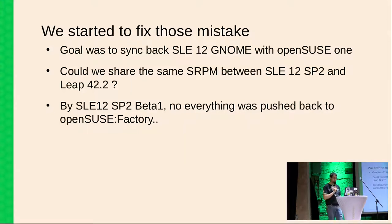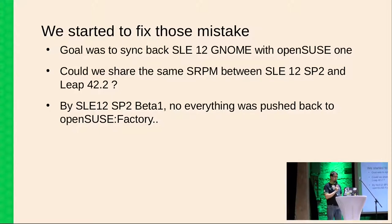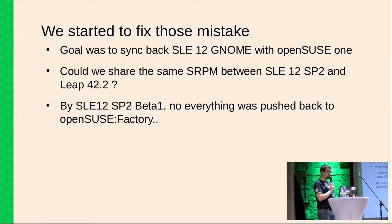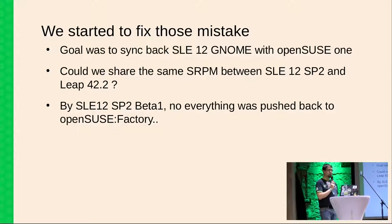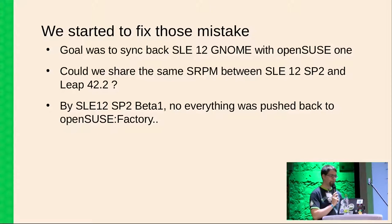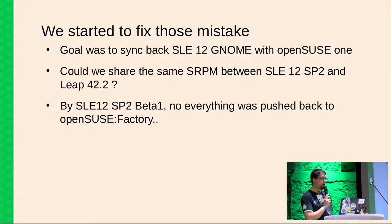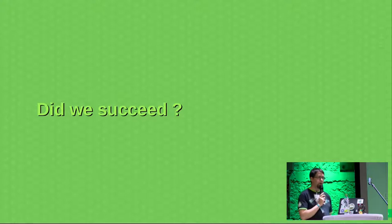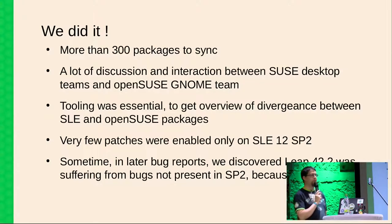But last year, we discussed that we need to fill this gap — we need to reimburse our technical debt, as some people say. We wanted to make sure that the SLEE 12 GNOME was in sync with the OpenSUSE GNOME. Our ultimate goal was to maybe share the same source RPM between SLEE 12 SP2 and OpenSUSE Leap 42.2 for the GNOME desktop. We were kind of there for beta 1, but not everything was there. So did we succeed? Did we reach the goal? We did.